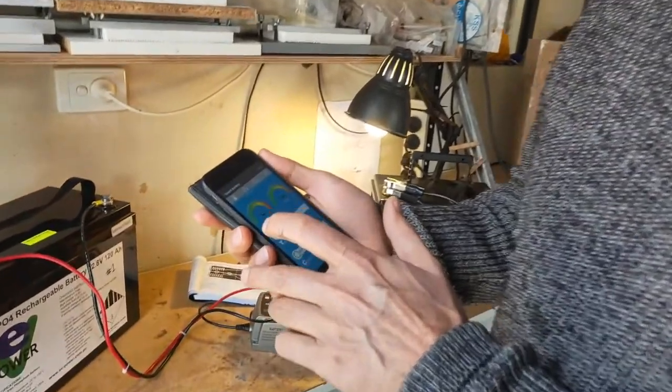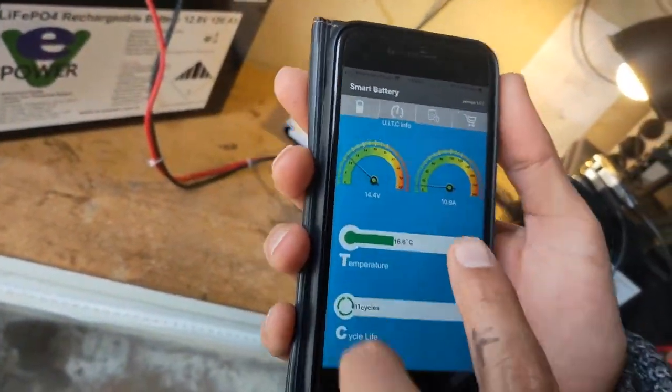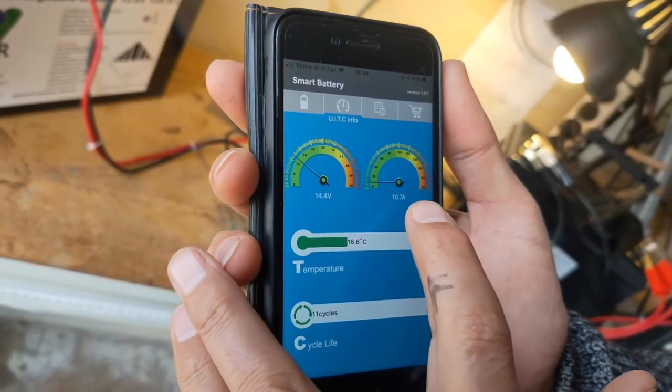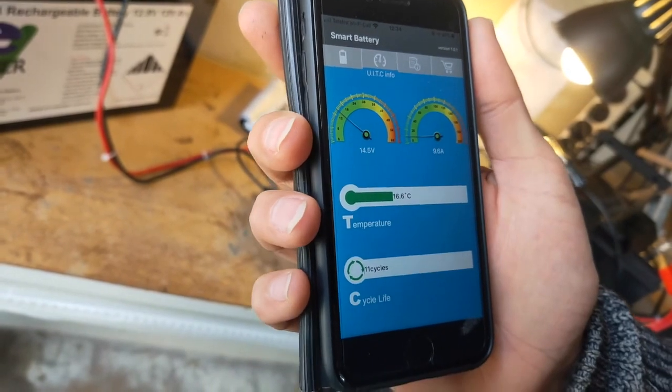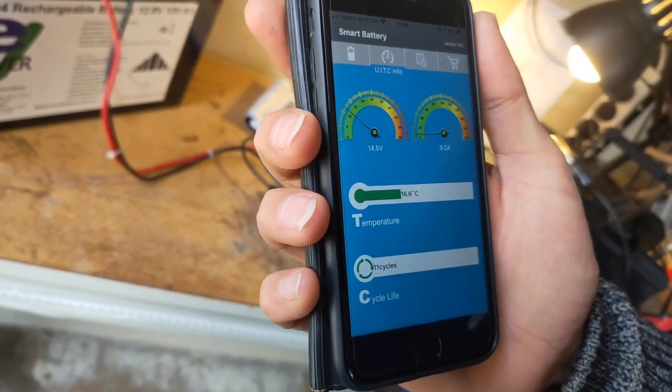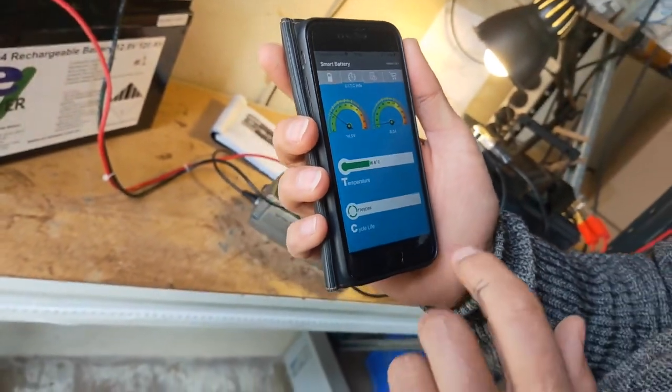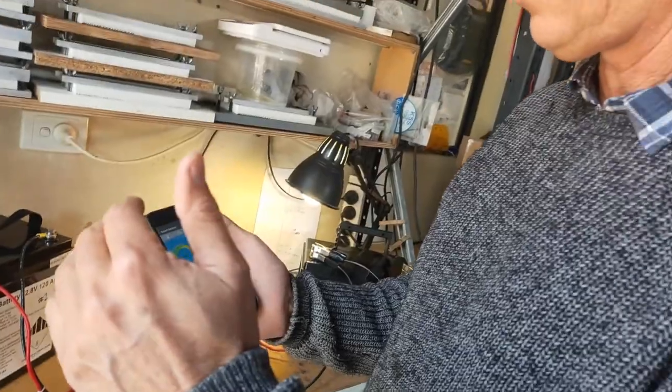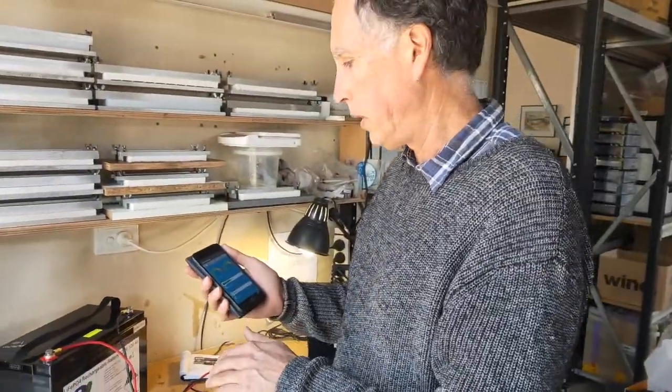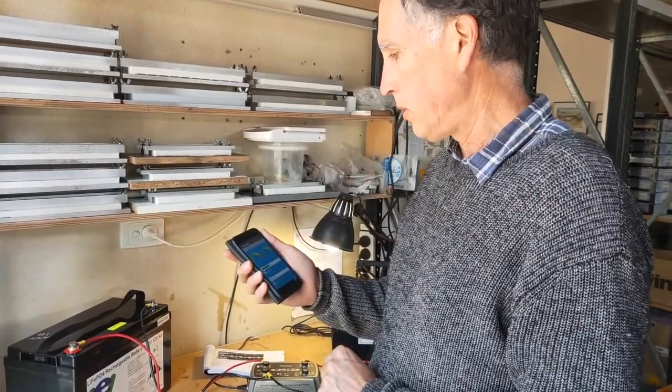So here we go. It's just hit 14.4 volts and the current's starting to drop back there to 10.7 amps, 10.4, 10.3. So the current's dropping back quite quickly, which is what you would expect with a lithium battery.